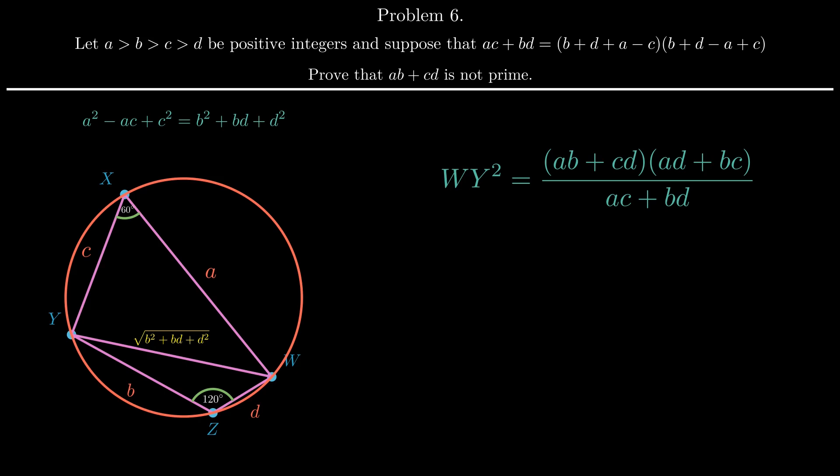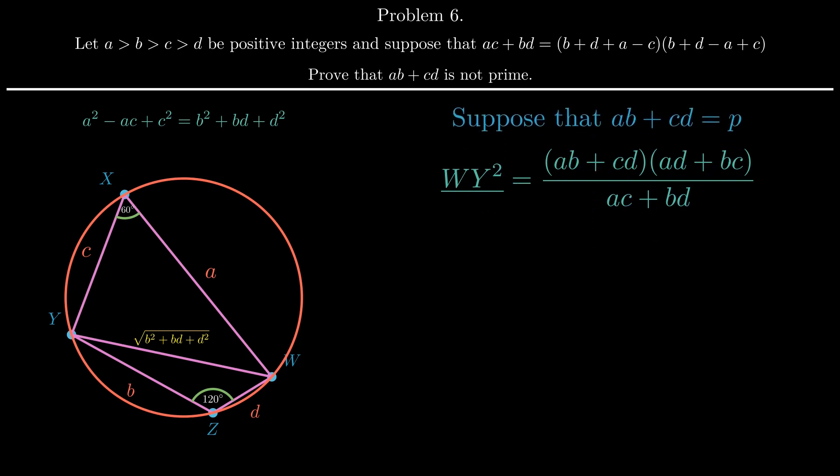Now let's suppose, for the sake of contradiction, that ab plus cd is indeed prime. Note that YW squared is an integer, as it is b squared plus bd plus d squared, and b and d are integers. So, ab plus cd times ad plus bc over ac plus bd is an integer.